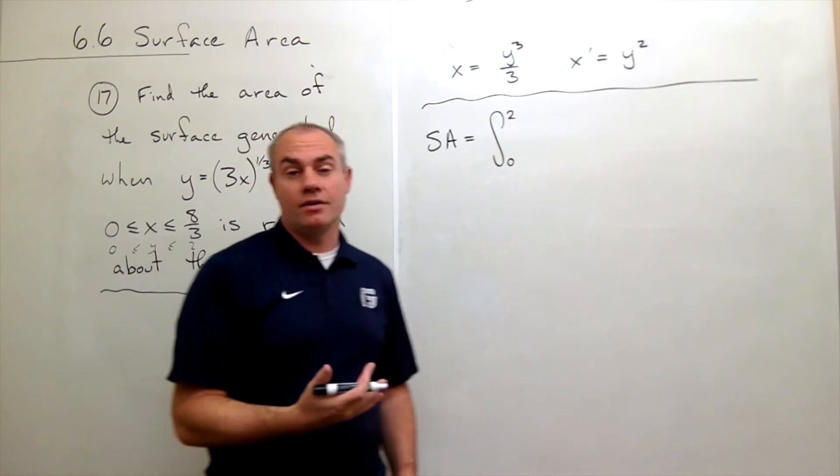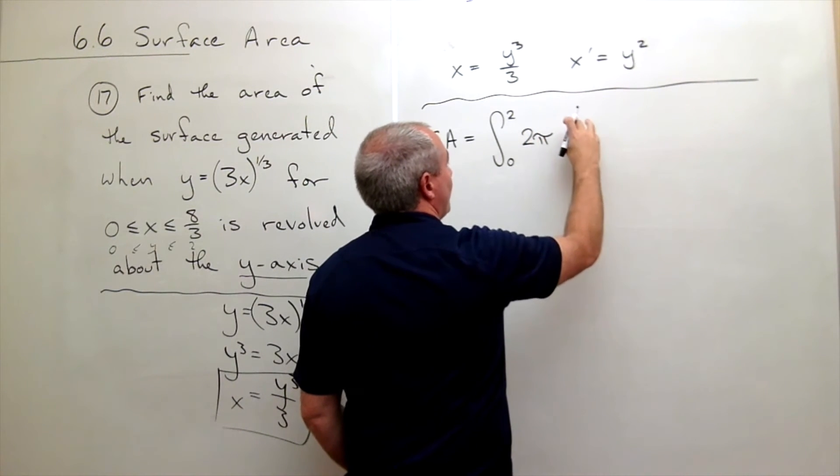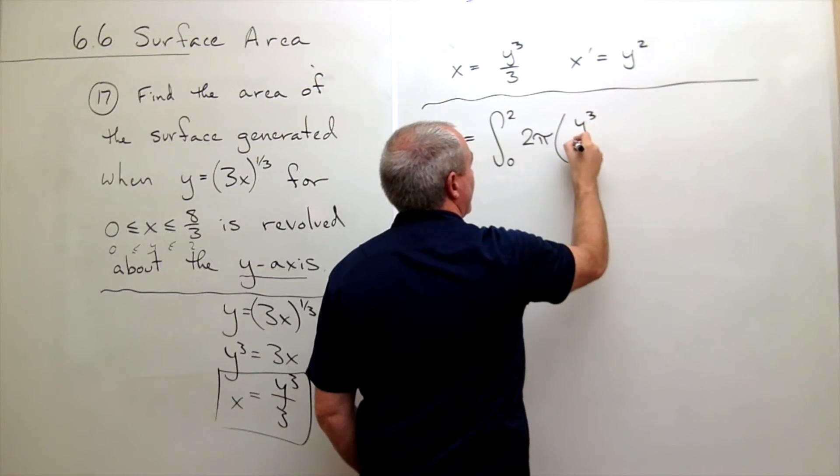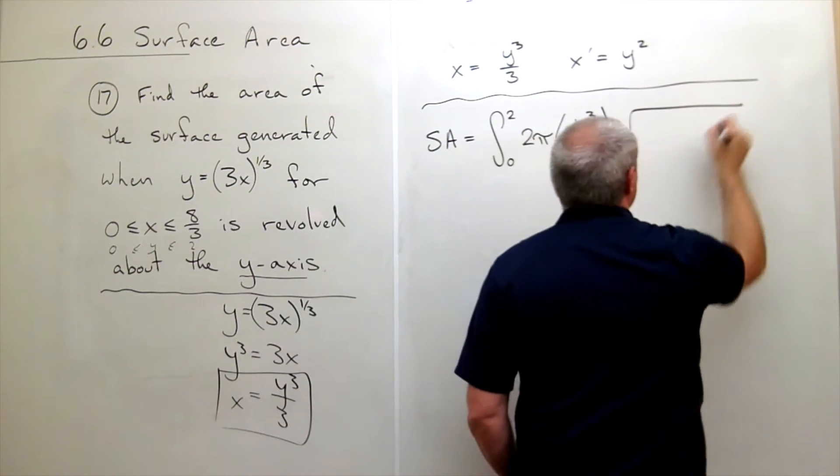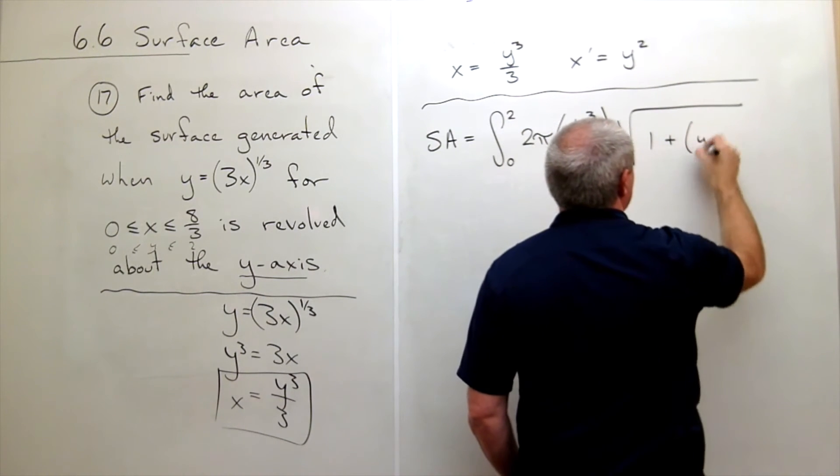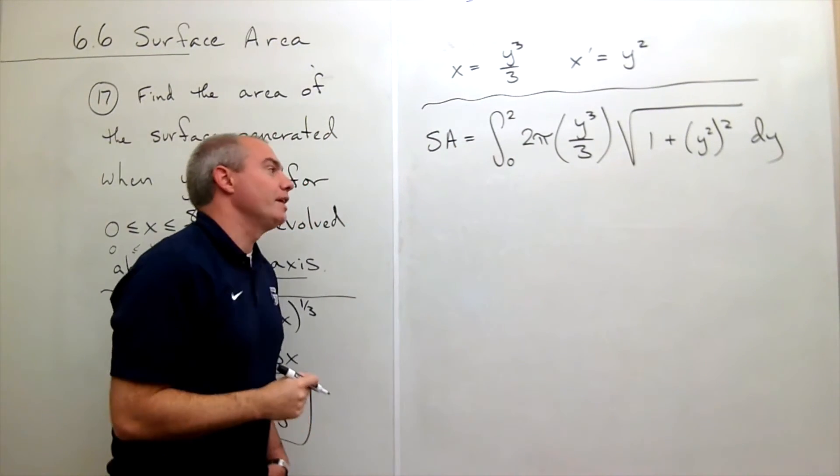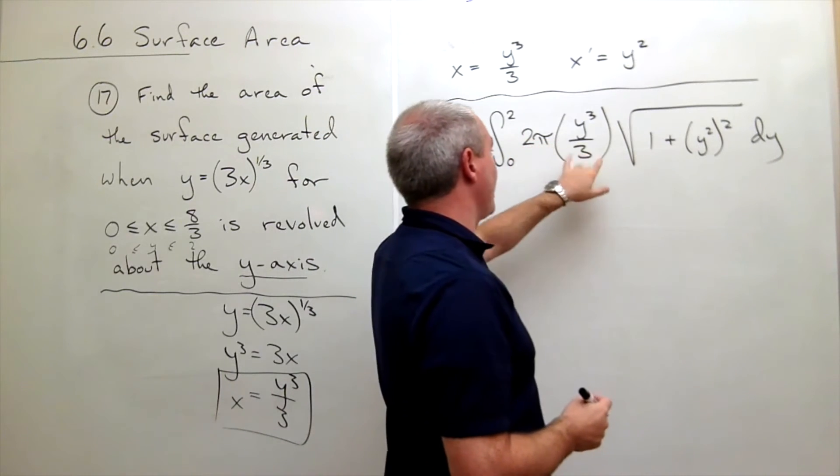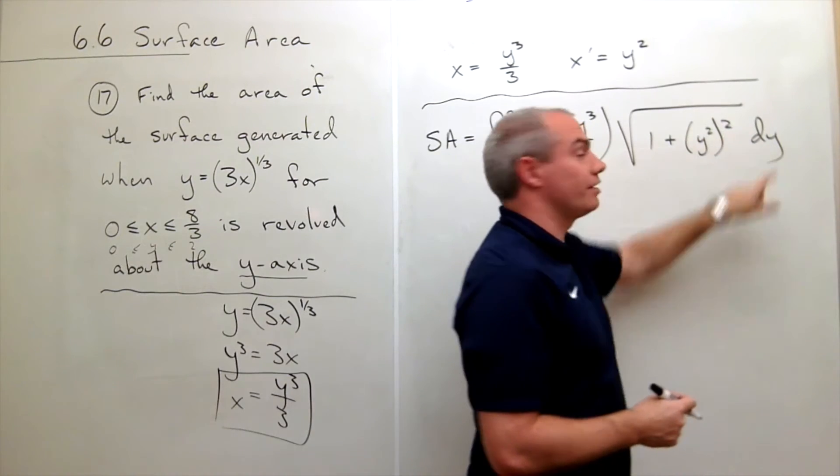Now the rest of the formula follows as normal. I get my 2π, I've got my function here, which in this case is y cubed over 3, times the square root of 1 plus the derivative, which is y squared, squared dy. And you run through this one more time, so I've got my a, my b, my 2π, my function, my square root of 1 plus the derivative squared dy.